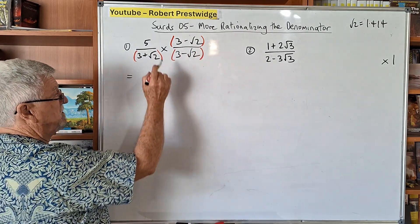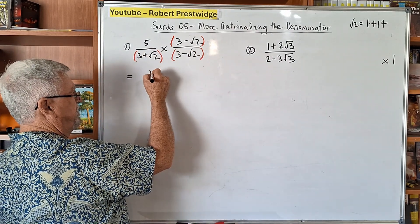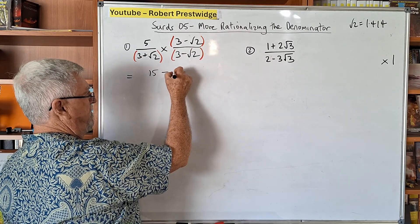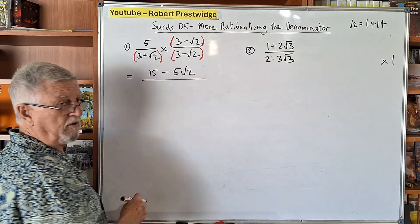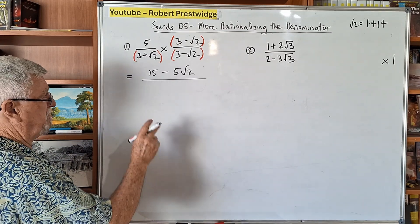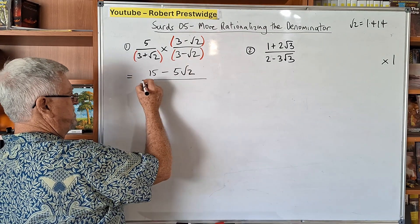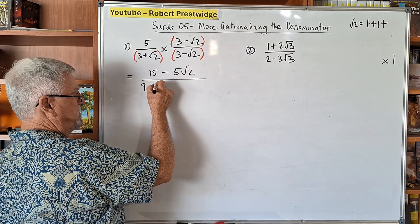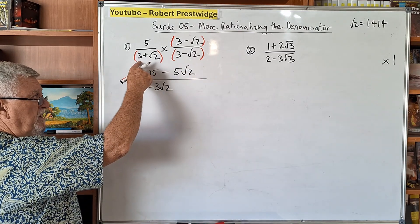The top's easy to expand. The 5 will be times the 3, which is 15. Most people are okay with that. The 5 times the minus root 2 is minus 5 root 2. Now the denominator. I'm going to do the whole thing, be patient with me. 3 times 3 is 9. 3 times minus root 2 is minus 3 root 2. So we've finished the 3's.